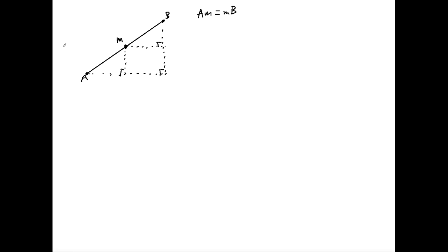Now notice how we can label each component of each equal sub-segment: the horizontal component as A, and we can have vertical component B, vertical component C, and vertical component D. This would be B.